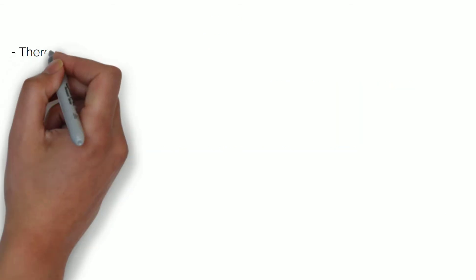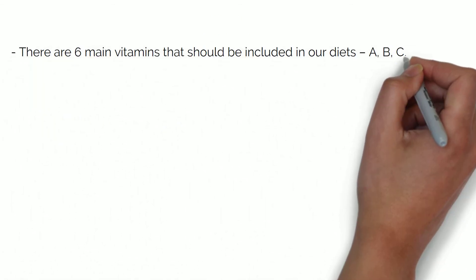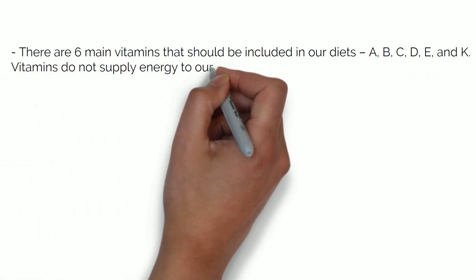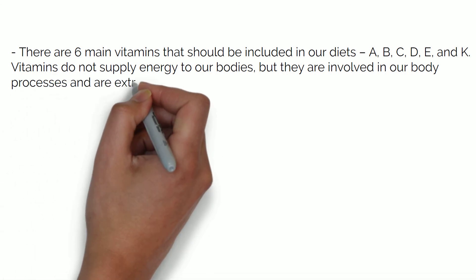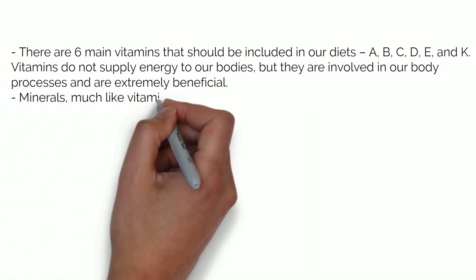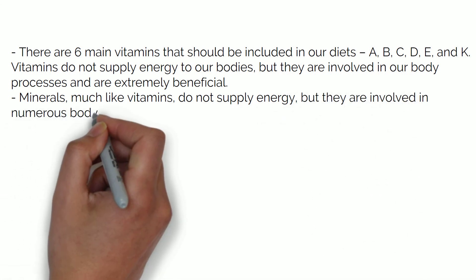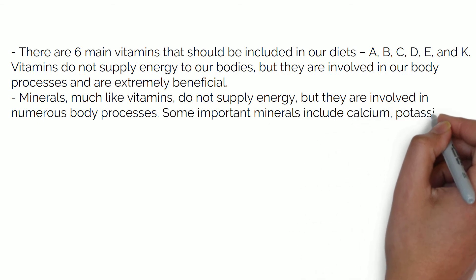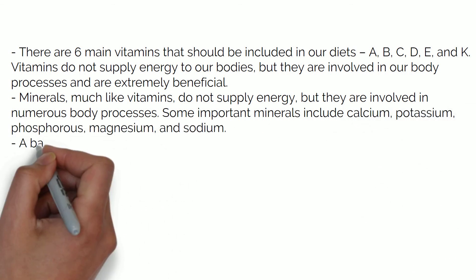There are six main vitamins that should be included in our diets: A, B, C, D, E and K. Vitamins do not supply energy to our bodies but they are involved in our body processes and are extremely beneficial. Minerals, much like vitamins, do not supply energy but are involved in numerous body processes. Some important minerals include calcium, potassium, phosphorus, magnesium and sodium.